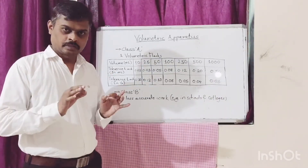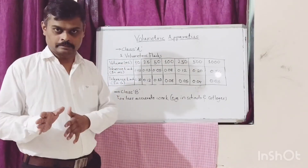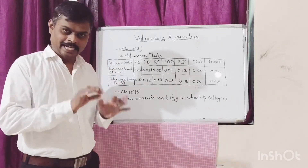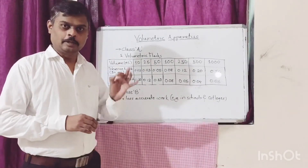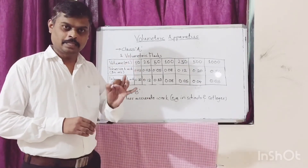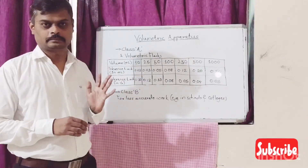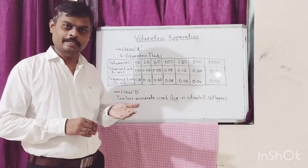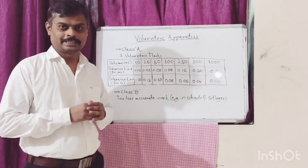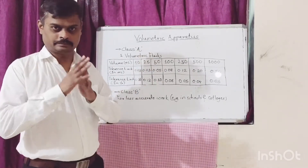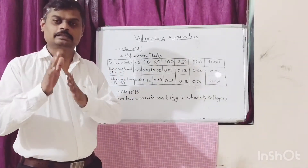If your expected burette reading is less than 10 ml, it is mandatory to use a burette of 10 ml or a micro burette of 10 ml. You cannot use a burette of 25 ml or 50 ml. This is mentioned in USP General Chapter 31.